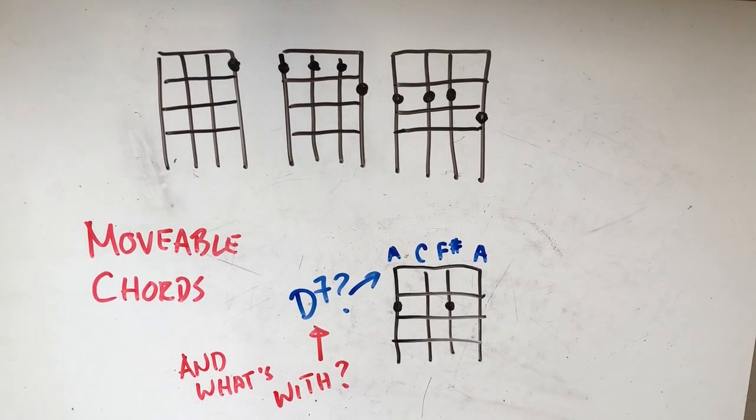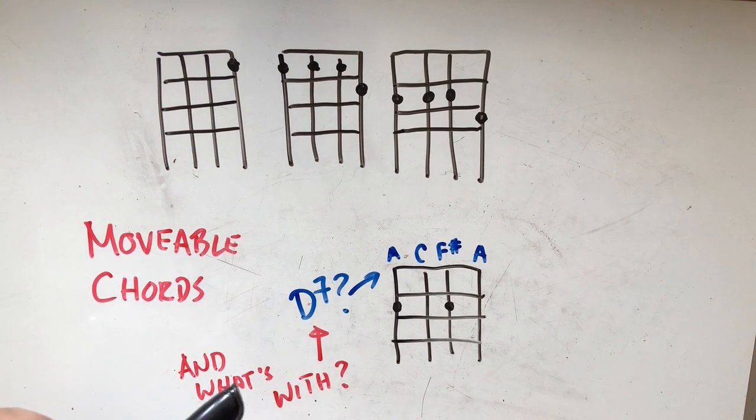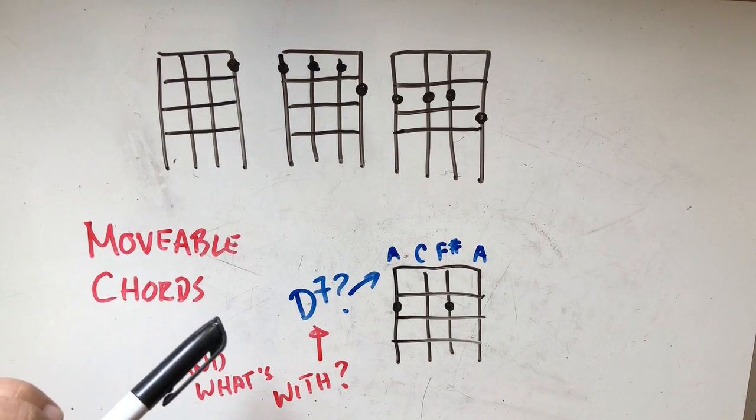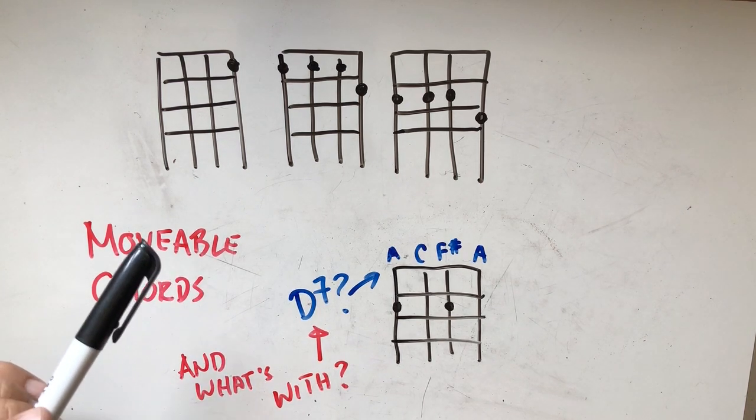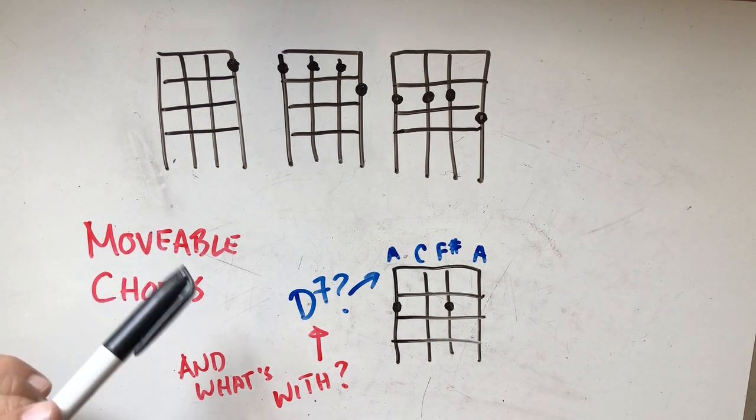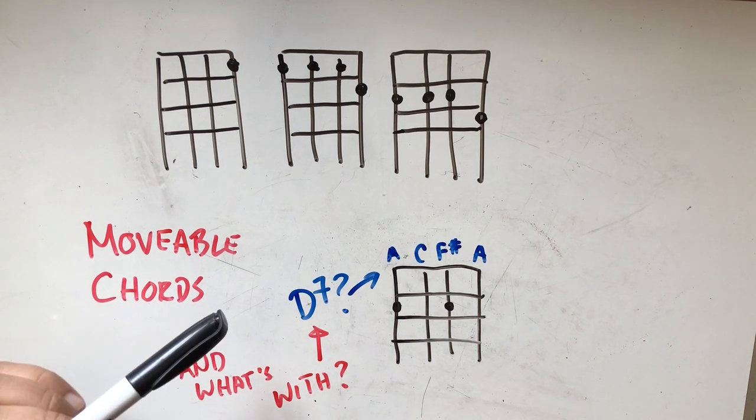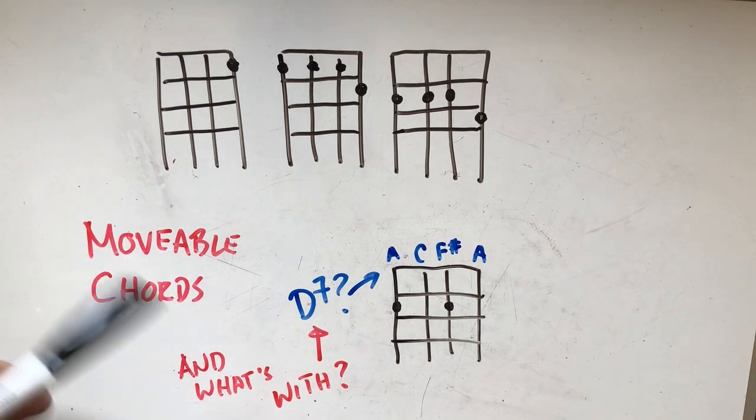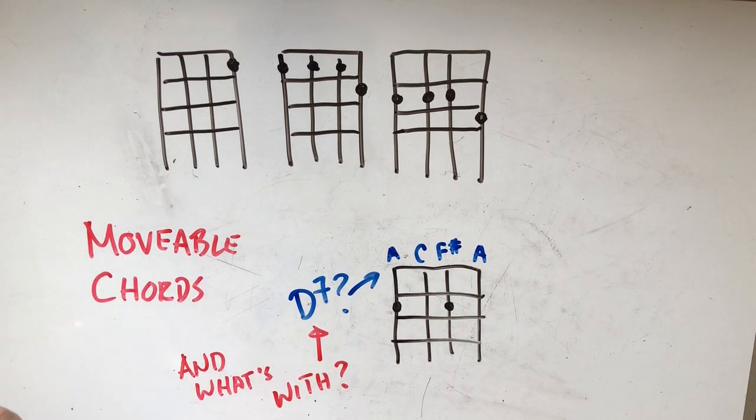Today we're going to look at what we call movable chord shapes. Movable chord shapes are simply chords where all four strings are pushed down in some way, so that if you were to move the entire chord up or down the fretboard, you would have the same quality chord. Just the starting note would be different because you're sharping or flatting it depending on how much you move it.